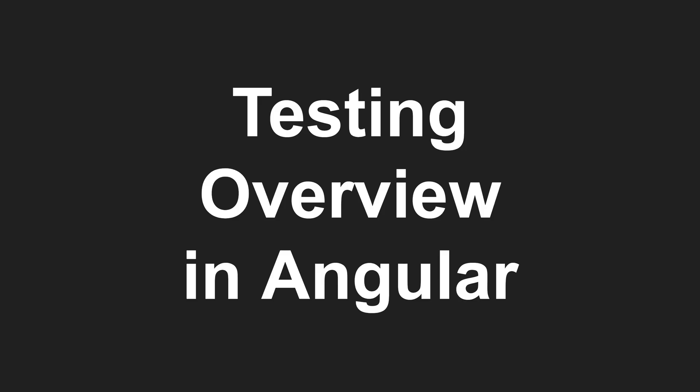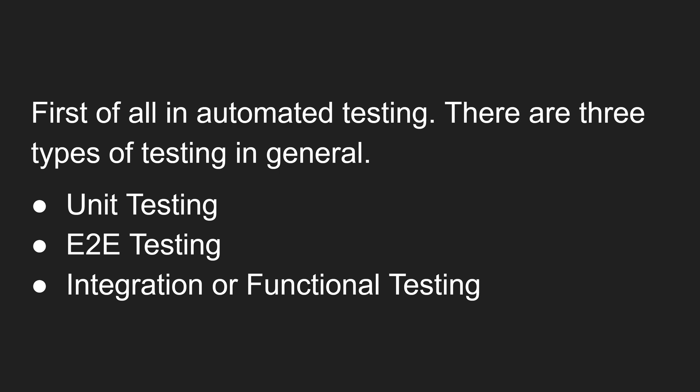The title here is 'Testing Overview in Angular.' In automated testing generally, there are three types: unit testing, E2E testing, and integration or functional testing. Unit testing and E2E testing — that is end-to-end testing — we already know about, and we'll look at all three types.